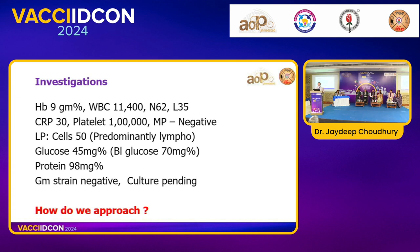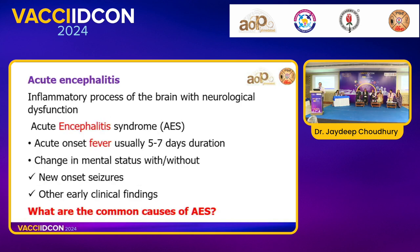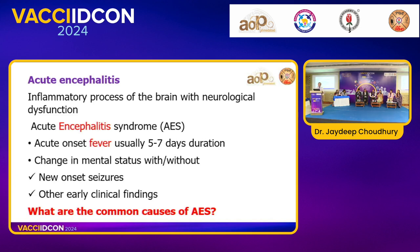Fever, altered sensorium, and convulsion together constitute acute encephalitis syndrome — an inflammatory process in the brain with neurological dysfunction. Acute onset fever, usually within five to seven days, with change in mental status with or without new onset seizure is broadly classified as AES. Dr. Ketan Shah was asked about common causes of AES in day-to-day practice.